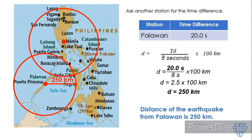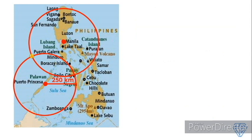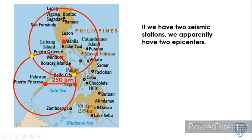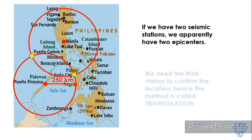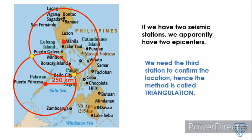However, in this case we have two intersection points — one here and another one here. Of course, this is not possible, as there is no earthquake that has two epicenters. That is the problem with having only two seismic stations: we apparently get two epicenters, which is impossible. So we need a third station to confirm the location — hence the method is called Triangulation.